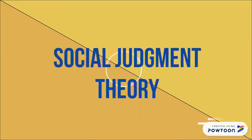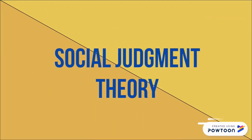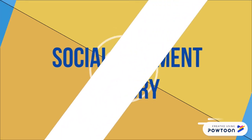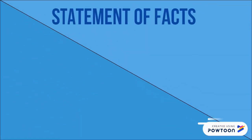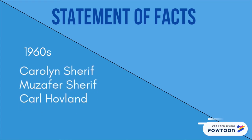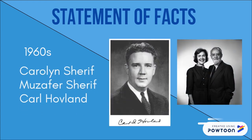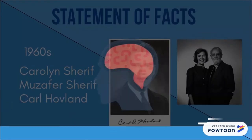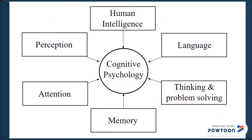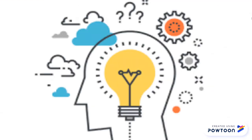Let's get into today's topic: Social Judgment Theory. Social Judgment Theory was first developed in the 1960s and was proposed by Carolyn Sharif, Muzafer Sharif, and Karl Hovland. Psychology at that time was in the development of cognitive psychology. Researchers were curious about what drives people to perform certain behaviors and the reasons behind them. This background period is when we began to get a deeper understanding of the human cognitive process.